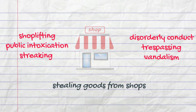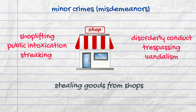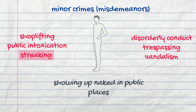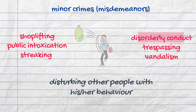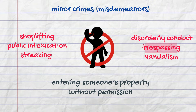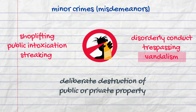Those were examples of serious crimes, but there are so-called minor crimes, also known as misdemeanors. For example, shoplifting is when someone secretly steals goods from shops, hiding them in clothes or bags. Public intoxication is when a person appears visibly drunk, also known as public drunkenness, or under the influence of drugs in public places. Streaking is showing up naked in public places. When a person disturbs other people with his or her behavior, or just loitering in certain places without permission, it's called disorderly conduct. Entering someone's property without permission is trespassing, and deliberate destruction of public or private property is vandalism.